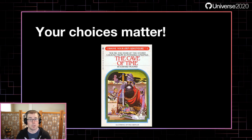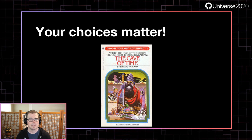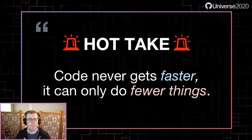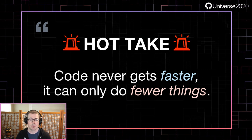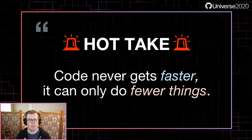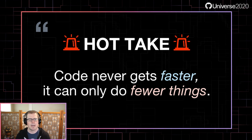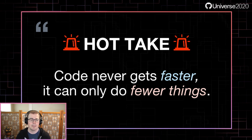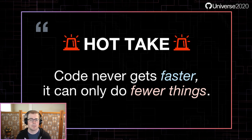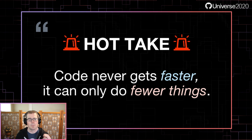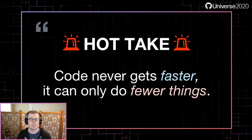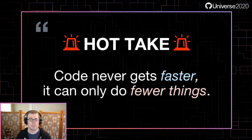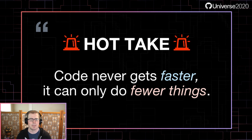The most important thing I want to communicate today is that your choices matter. You have agency in how your repository is structured and how it grows. Let me drop some universal advice for optimizing your code: code never gets faster, it can only do fewer things. Whether you're talking about taking an algorithm from O(n²) to O(n), or just reducing that value of n, everything is about executing fewer instructions or transferring less data. This will be a recurring theme — I'll ask you to reduce the size of your Git repositories or reduce what you're expecting them to do.